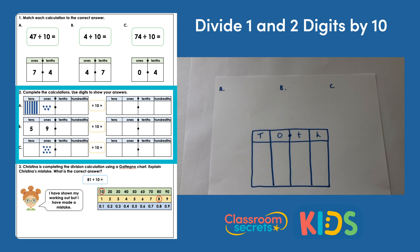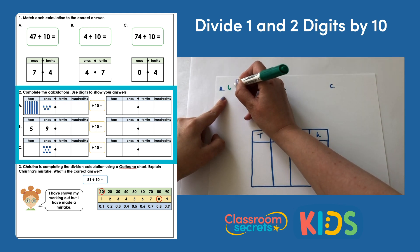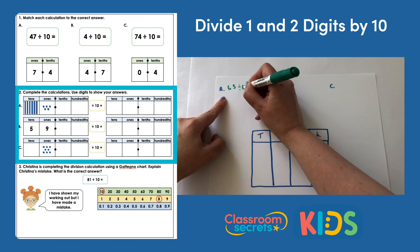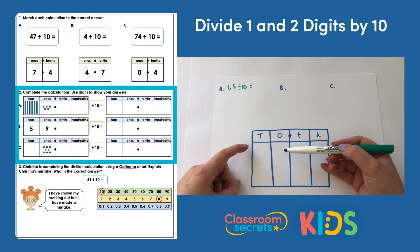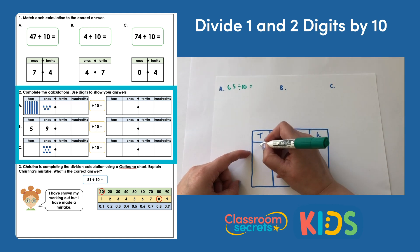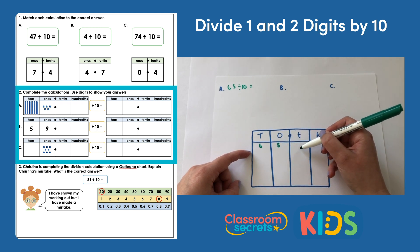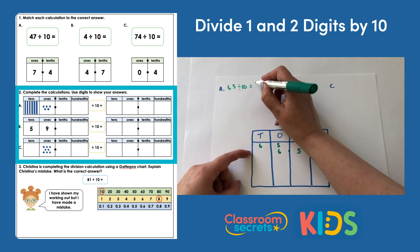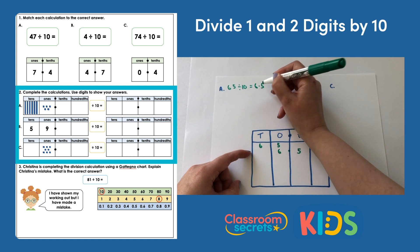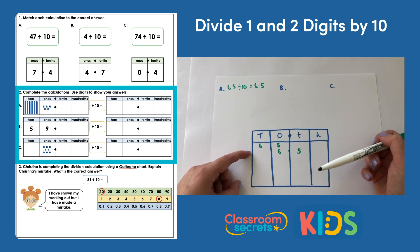Calculation A: we have tens and ones represented using base 10. I have 6 tens and 5 ones, so that's 65, divided by 10. Each digit is going to move one place to the right, so we have 6 ones and 5 tenths. So the answer is 6.5. Your answer should be on the place value grid showing 6 ones and 5 tenths with the decimal point in the middle.